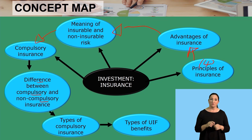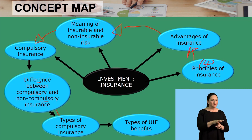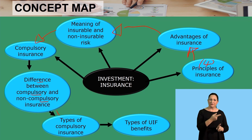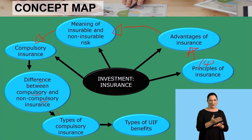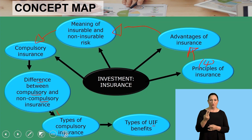When we look at types of compulsory insurance, remember we have the Road Accident Fund, we have Compensation for Occupational Injuries and Diseases (COID), and we also have the Unemployment Insurance Fund (UIF) — all discussed as forms of compulsory insurance.